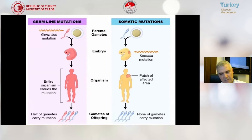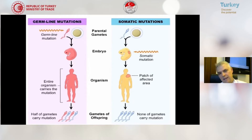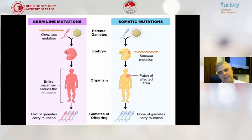We can divide mutations into two different forms. One is germline mutation, which is inherited in our normal cells in our body. We also have somatic mutations, which are only present in our tumor cells.